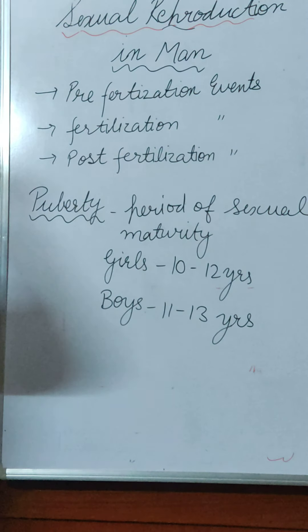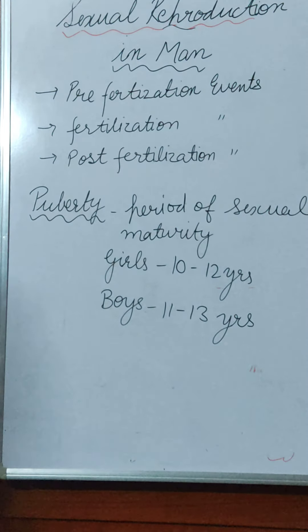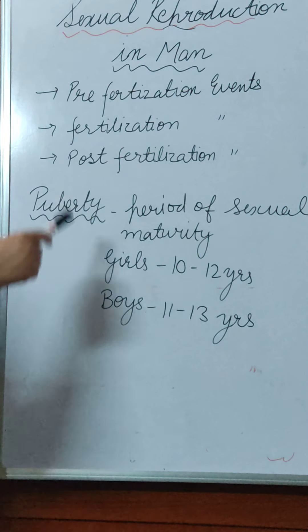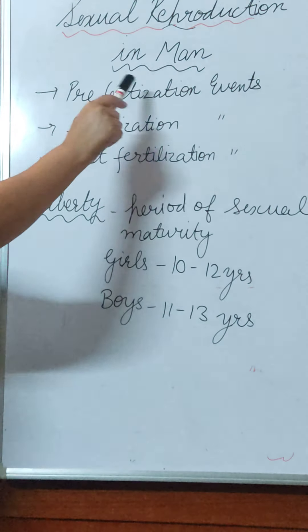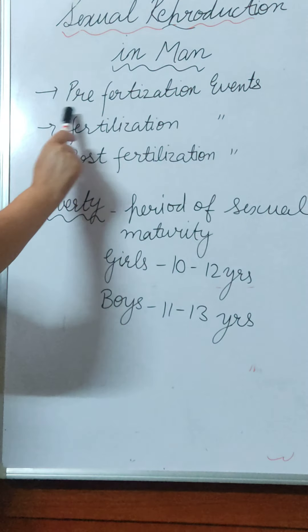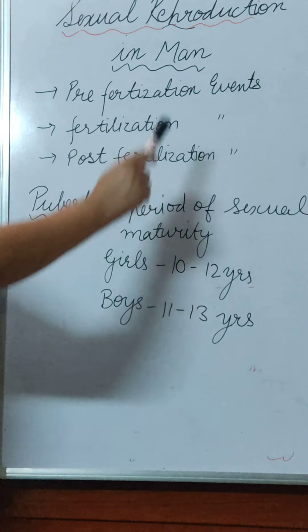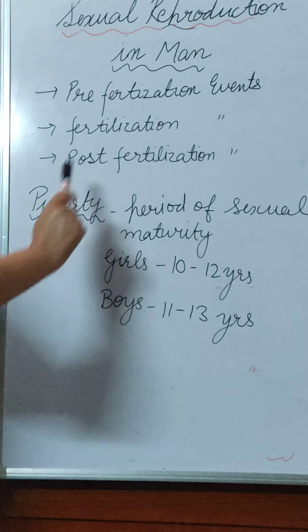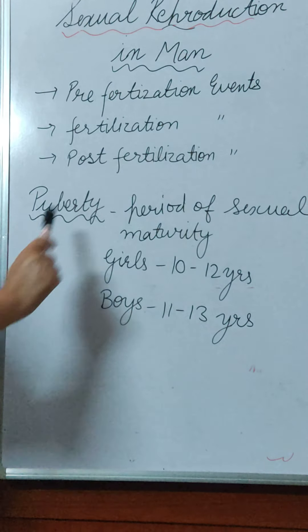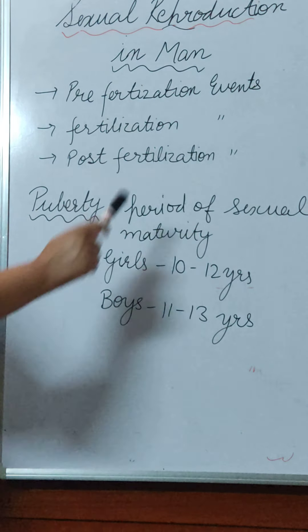Good morning students. In today's class we are going to start with sexual reproduction in man. Like we learned in plants, the reproductive phase is divided into three phases: pre-fertilization, which occurs before fertilization; fertilization, which involves the fusion of gametes — sperm and ovum; and post-fertilization.